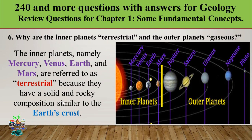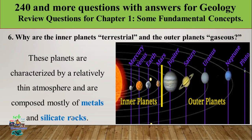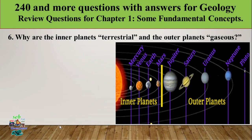The composition of the inner planets is similar to the Earth's outer crust — that is the reason the inner planets are called terrestrial. These planets are characterized by a relatively thin atmosphere and are composed mostly of metals and silicate rocks.